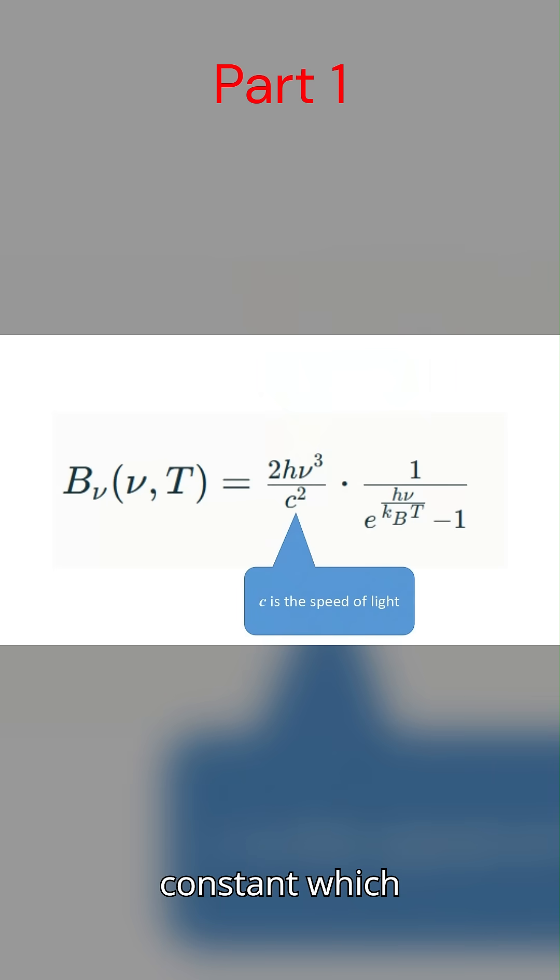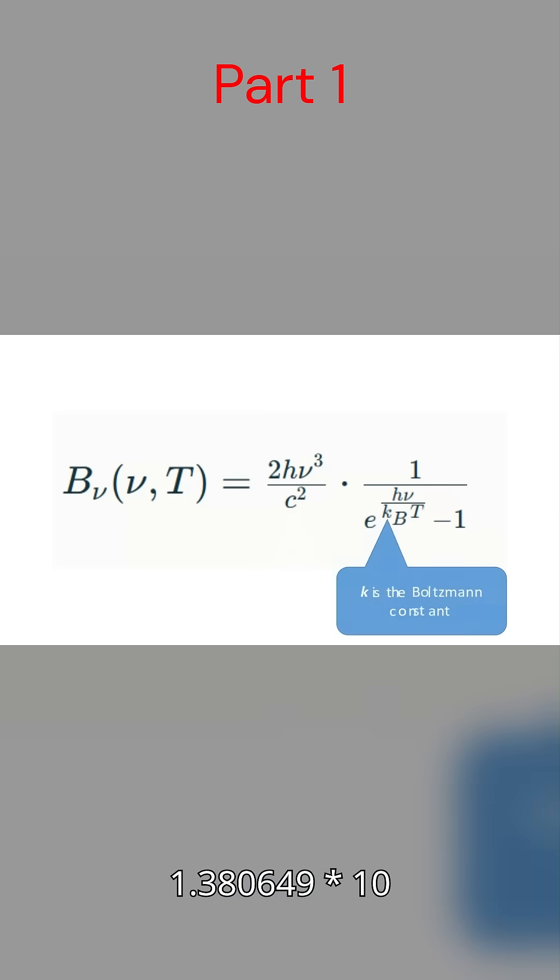k is the Boltzmann constant, and its exact value is 1.380649 times 10 to the negative 23rd joule per kelvin, and t is temperature in kelvin units.